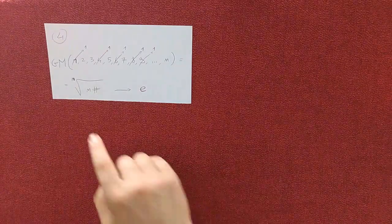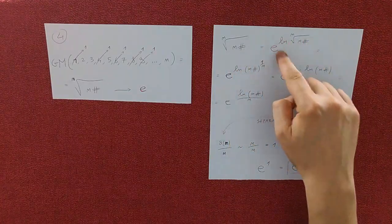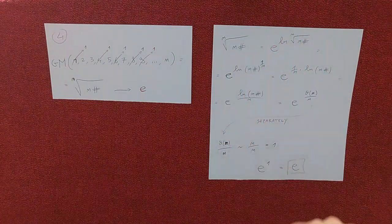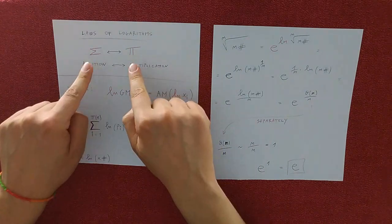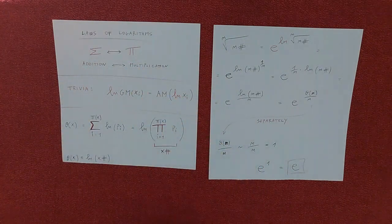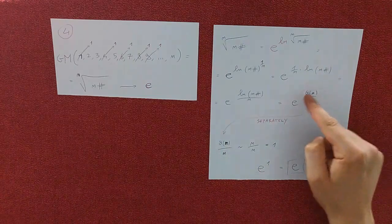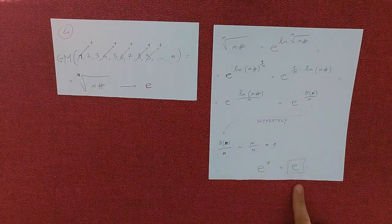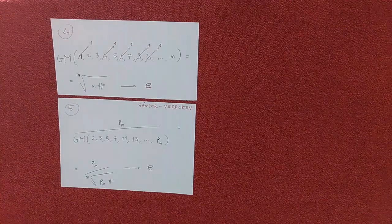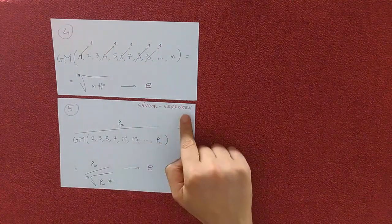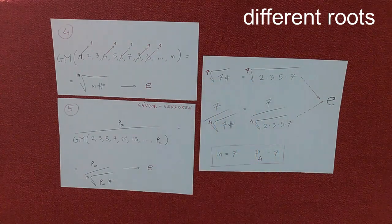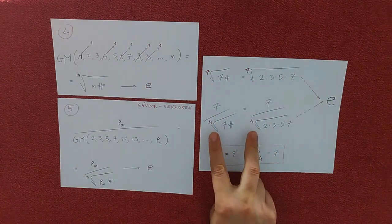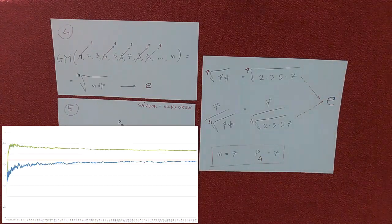Here we are at the most interesting geometric mean. Like before, let's write this. But this is exactly the Chebyshev theta function. Using laws of logarithms, we can switch addition with multiplication. The argument of the logarithm is, by definition, the primorial of x. By studying the exponent separately, we have 1 and e. At last, the bonus formula — this is a result due to Sander Verrocken. For example, with number 7: the root is the 4th root, since 7 is the fourth prime number, so we have 4. Both these expressions, considering all prime numbers, have e as their limit. Thanks, and bye for now.